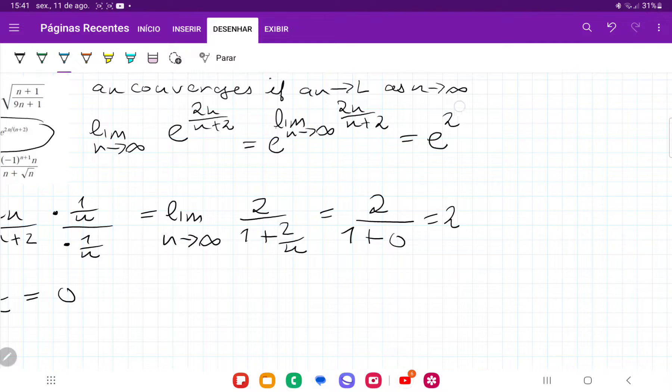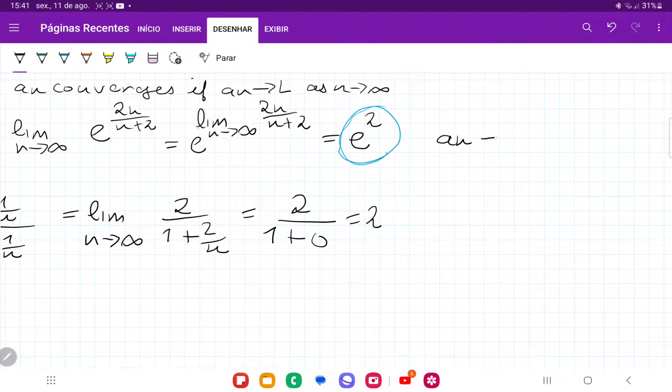Therefore, we can see that the limit here is e to the power of 2. So we say that a_n tends to e to the power of 2 as n approaches infinity, and so a_n converges.